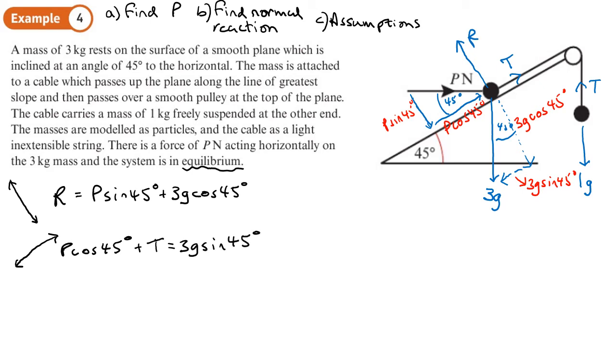And that will equal the 3g sin 45 going down or parallel to the slope going downwards. And then we're going to look at the forces going this way. So we look at the other part of the diagram. And that will be the t that goes up. Will equal the 1g going down. So we need to start by finding p. Now, I can do that by taking this equation and substituting it in here to find p. And then once I've done that and I found p, I can then substitute that into the first equation here to work out what r is for part b of the question. So let's just write down a, part a.